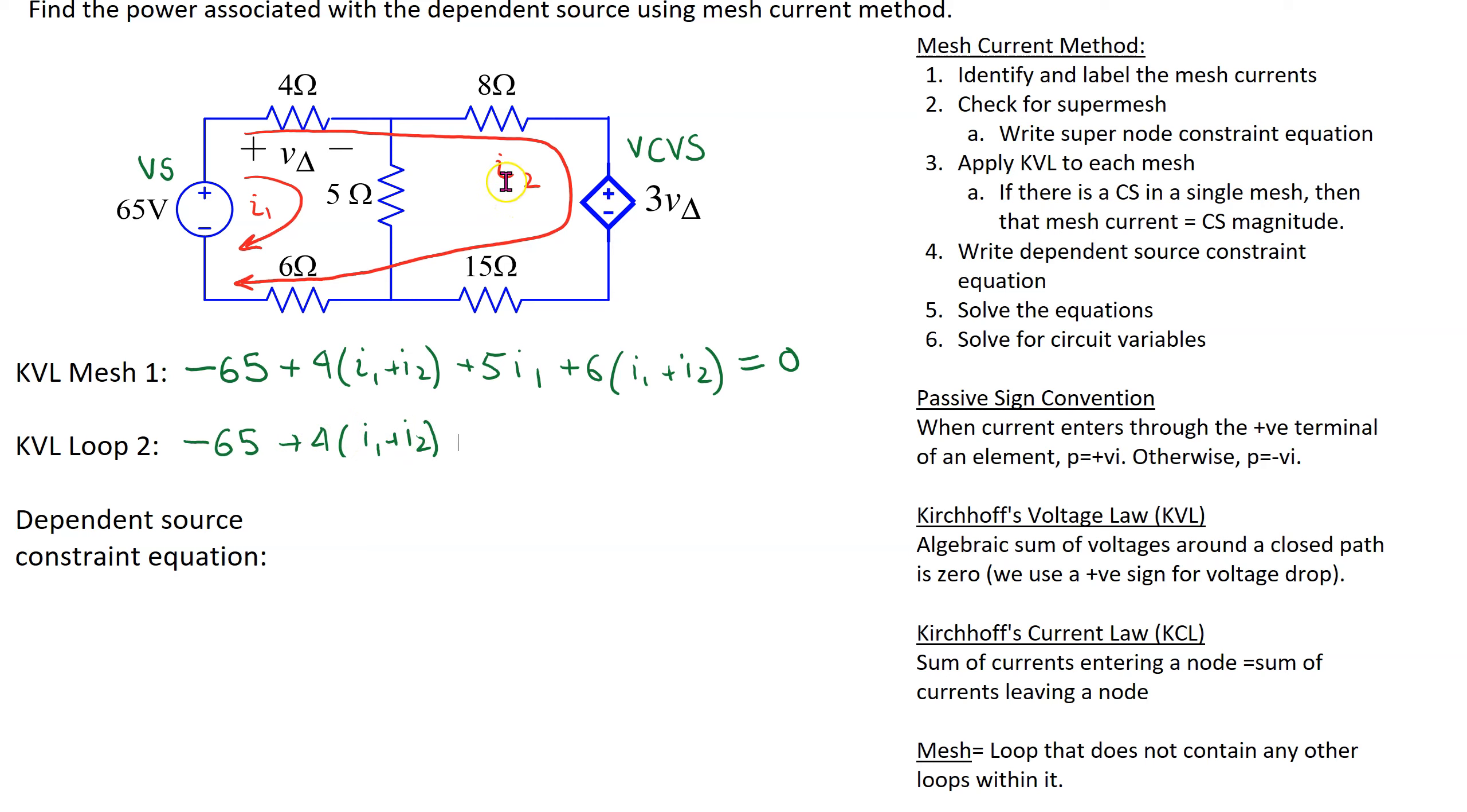Through the 8 ohm resistor the current is only I2. So we get 8 I2. For the dependent source we are going from plus to minus. So this is a voltage drop. So we get plus 3 V delta.